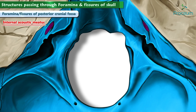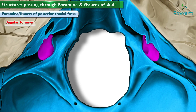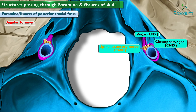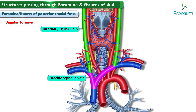The internal acoustic meatus transmits two cranial nerves: the seventh cranial nerve, the facial nerve, and the eighth cranial nerve, the vestibulocochlear nerve. The jugular foramen allows passage of the ninth, tenth, and eleventh cranial nerves — the glossopharyngeal, vagus, and spinal accessory nerves, respectively. It also allows the internal jugular vein to exit, draining blood from the head and neck down into the brachiocephalic vein and eventually into the right side of the heart via the superior vena cava.